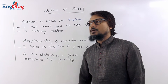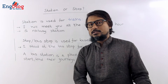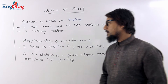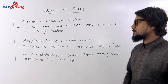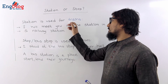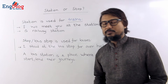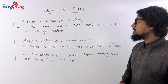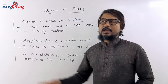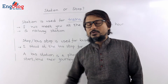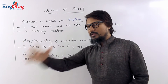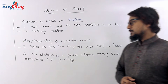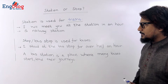A station or a stop — here 'stop' doesn't mean to stop working; it's a place where vehicles start and end their journey. 'Station' is used for trains. When you are talking about the place where trains stop and start from, 'station' is the word. For example: 'I will meet you at the station in an hour.' Station is a very common term.